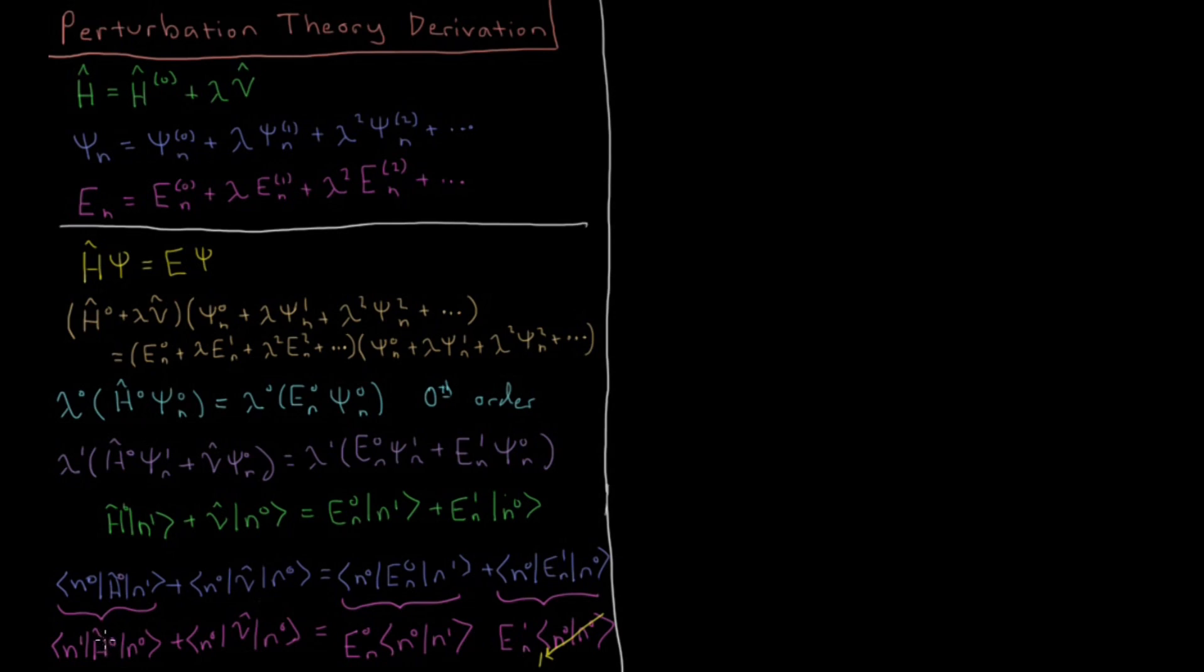So now we have H0 acting on n0. And we know from our reference Hamiltonian that H0 acting on psi 0 is just going to give us E0 psi 0. So when we move to the next page here, what we're going to have is n1, E0n, n0 for this first term. And then we can drag that down, we know that that's going to be E0 n1, n0, we can pull that out because that's a constant.